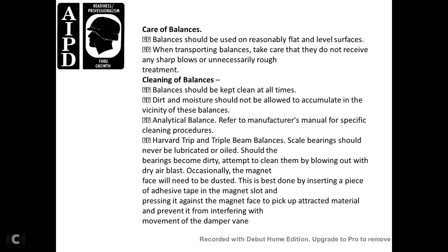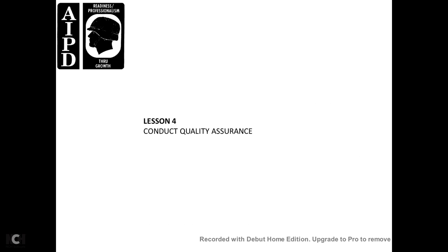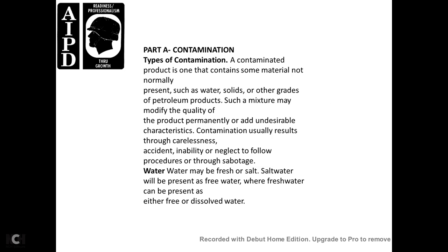Lesson 4: Conduct Quality Assurance. Part A: Contamination. A product is contaminated when it contains some material not normally present — such as water, solids, or other grades of petroleum — that modifies the quality of the product permanently and/or produces undesirable characteristics. Contamination usually results from careless accidents, inability or neglect in following procedures, or sabotage.